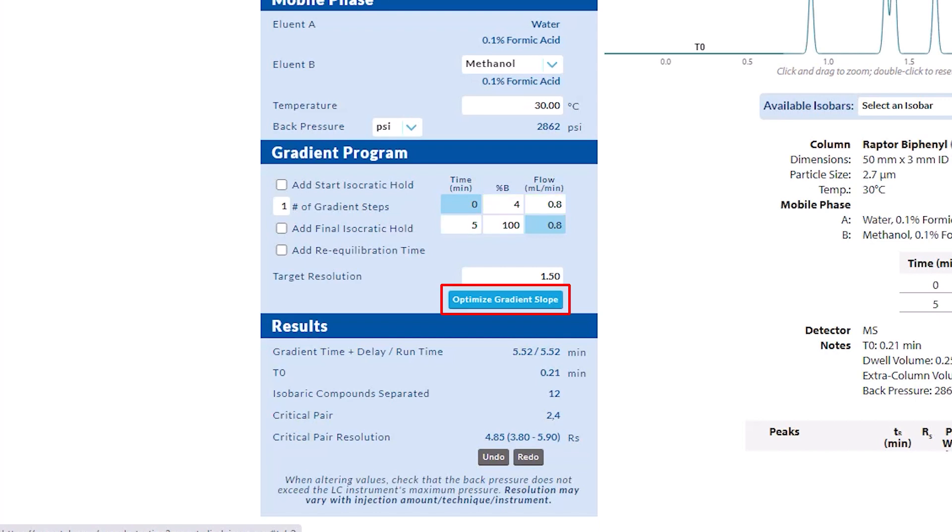You also have the optimize gradient slope button. This button will automatically calculate a new gradient to increase or decrease the resolution of the closest critical pair toward the target resolution. In our example, we'll set the target resolution to 2 and click the button.